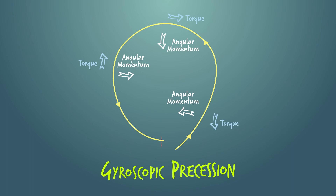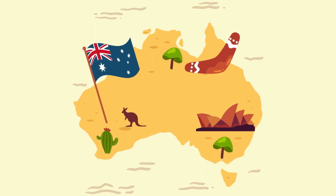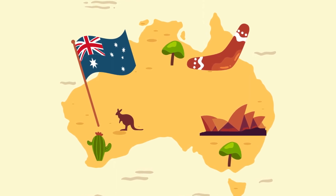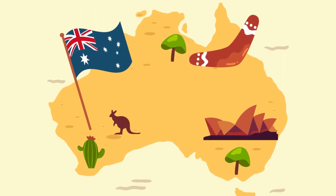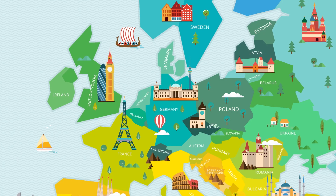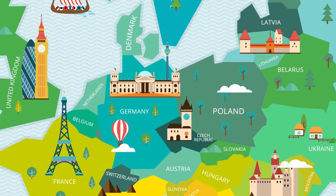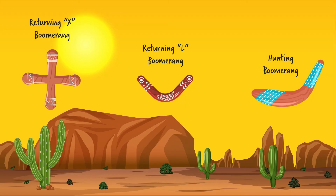Most of the physics behind boomerangs wasn't fully described until very recently, but boomerangs themselves are far older. Boomerangs have become synonymous with Australia, and boomerangs have been used there for thousands of years — the oldest found in Australia dates back to 10,000 years ago. But boomerangs are not just an Australian weapon: the oldest known boomerang in history is about 30,000 years old and was found in the Carpathian Mountains in Poland, and boomerangs were even found in King Tut's tomb in ancient Egypt. Now that you know the history and science behind boomerangs, it's time to go out and start throwing. Thanks for watching!